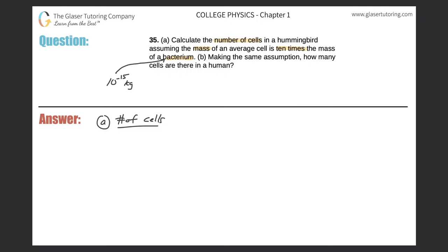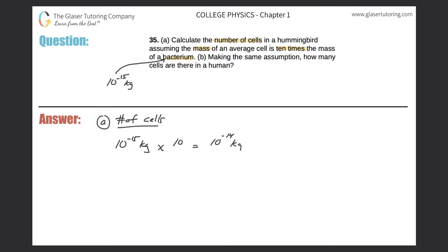Now it tells us that the mass of one of the cells in the hummingbird is going to be 10 times this mass. So we can take 10 raised to the negative 15 kilograms — that's the mass of a bacterium — and multiply that by 10. That gives us 10 raised to the negative 14, which is the mass in kilograms per one cell in a hummingbird.